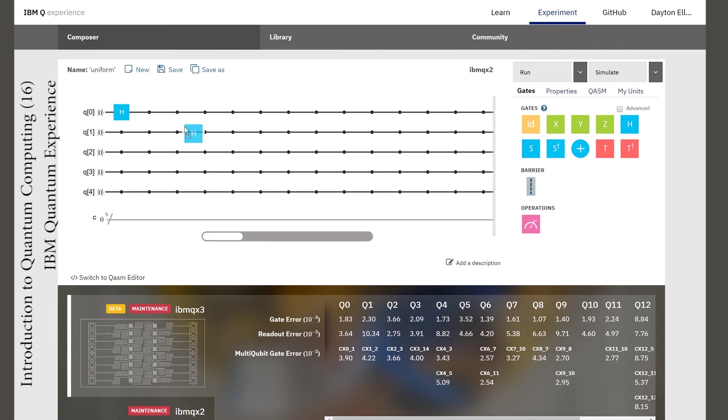With five qubits there are 32 basis states and if we're in the uniform superposition the probability of collapsing to any given basis state will be 1/32 or 0.03125.